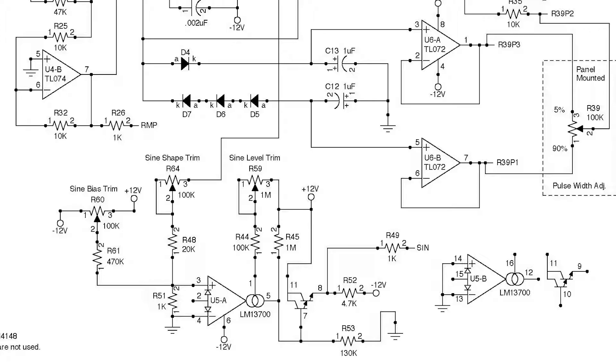And there is a special op amp here called a transconductance op amp. There's like a constant current source looking thing on the output. That's basically a really easy way to adjust the output amplitude just by applying a voltage to it.